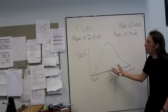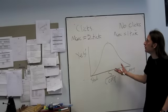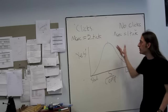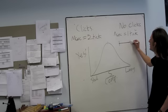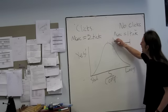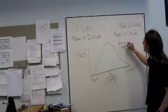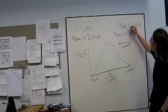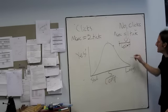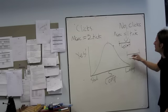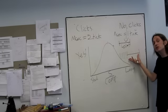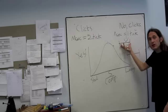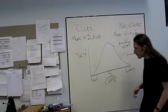So what Penton-Voak et al. did was to use a state change design within temporal generalization. So when they gave them the standard duration, that was in the no-click condition. And then before the comparison duration, they received clicks. So they're getting the comparisons in one state and the standard in a different state.